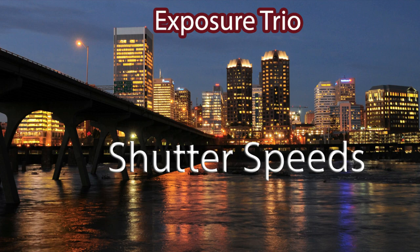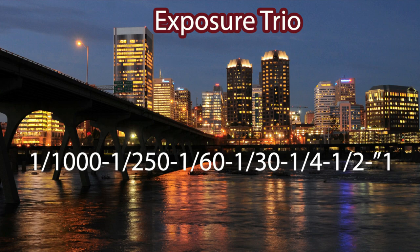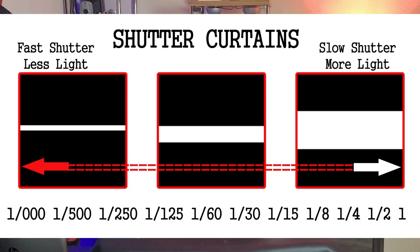Let's move on to the last member of the exposure trio: shutter speeds. Shutter speeds also come in a wide variety of numbers. On the higher end, faster shutter speeds are like 1/1000, 1/1500, 1/1250 of a second. And on the other end, slower shutter speeds can range from 1/30 of a second down to 1 second and beyond. Just like F-stops, shutter speeds also control the amount of light that passes through the lens. The smaller numbers let in more light; the larger numbers let in the least amount of light. So 1 second is a slow shutter — it remains open for 1 second and then it closes, allowing a lot of light to pass through. On the other hand, a fast shutter speed like 1/500 or 1/1000 opens and closes so fast, it doesn't allow a lot of light to pass through.